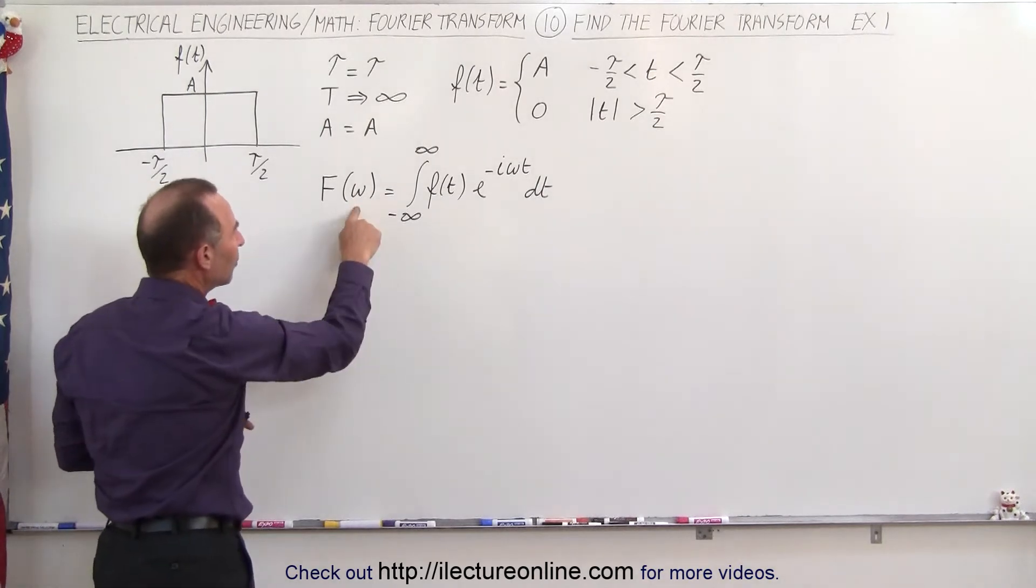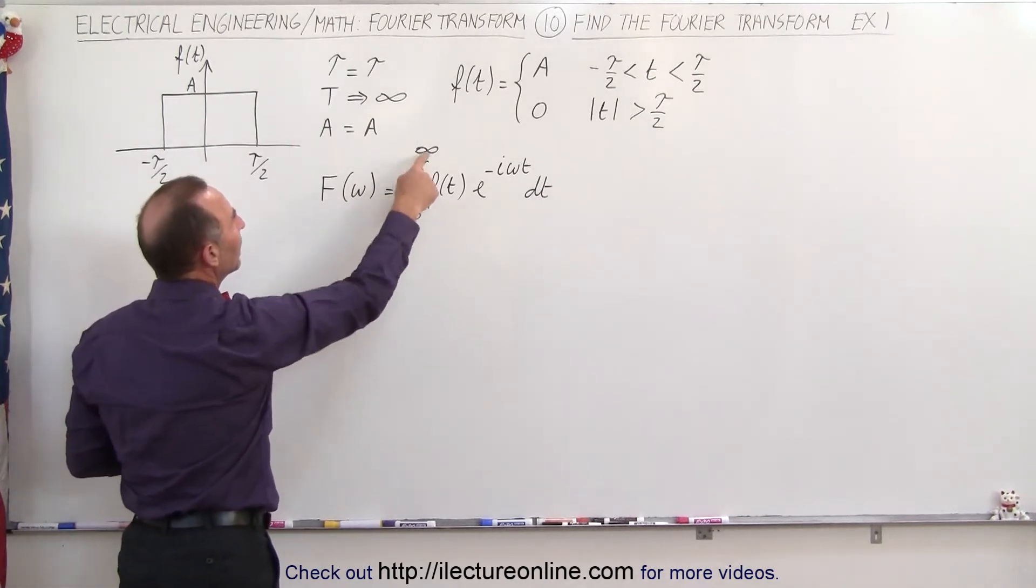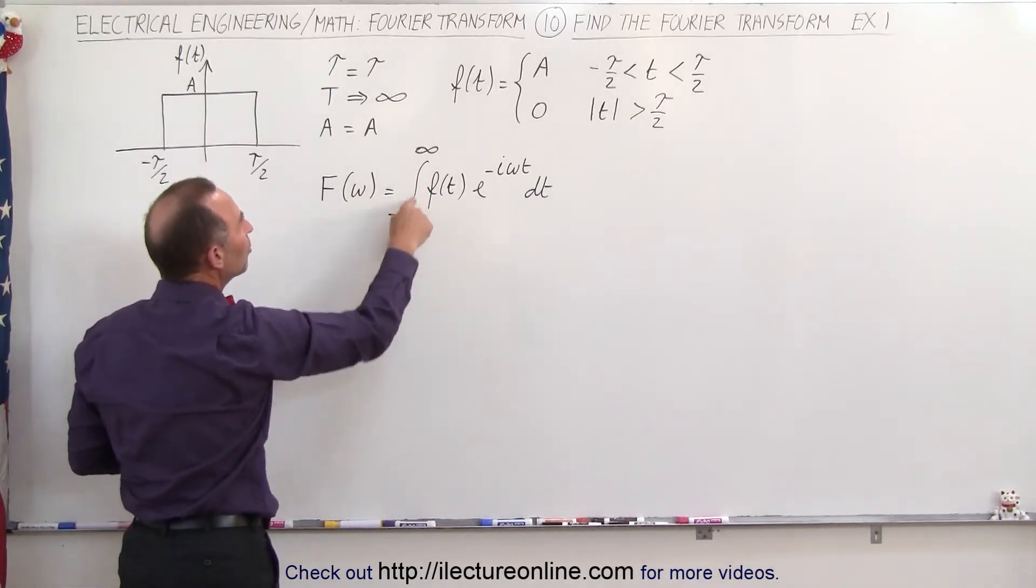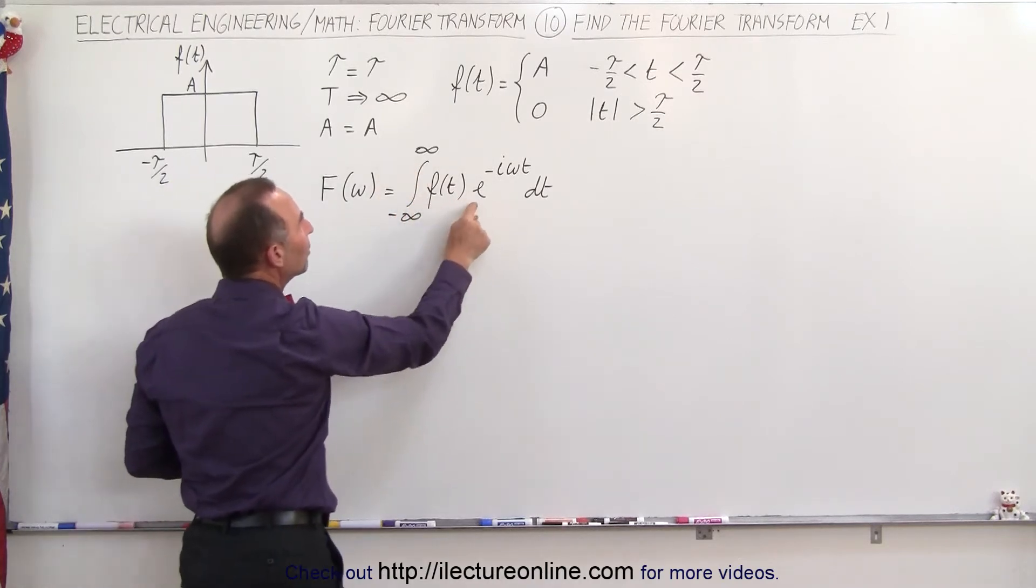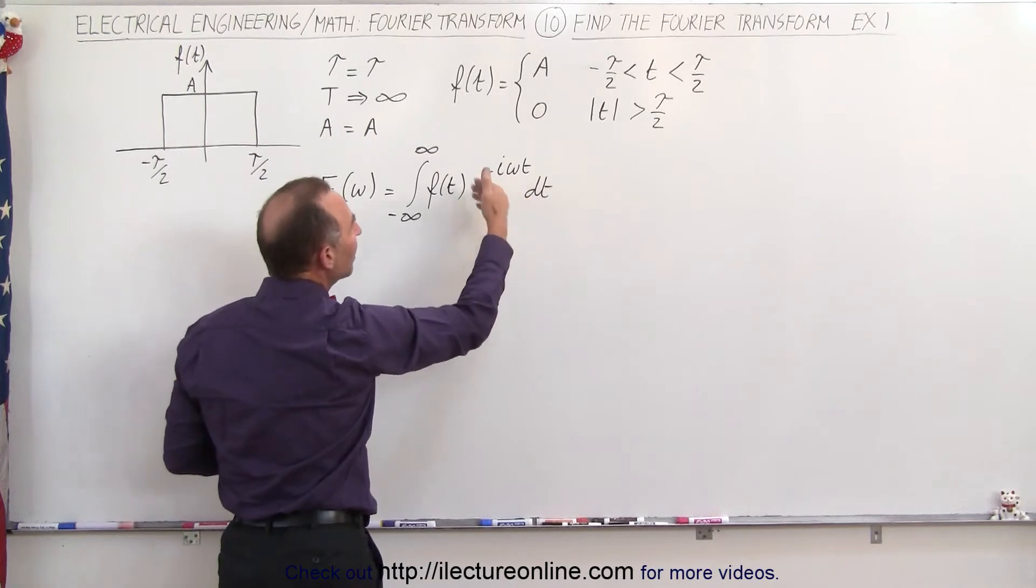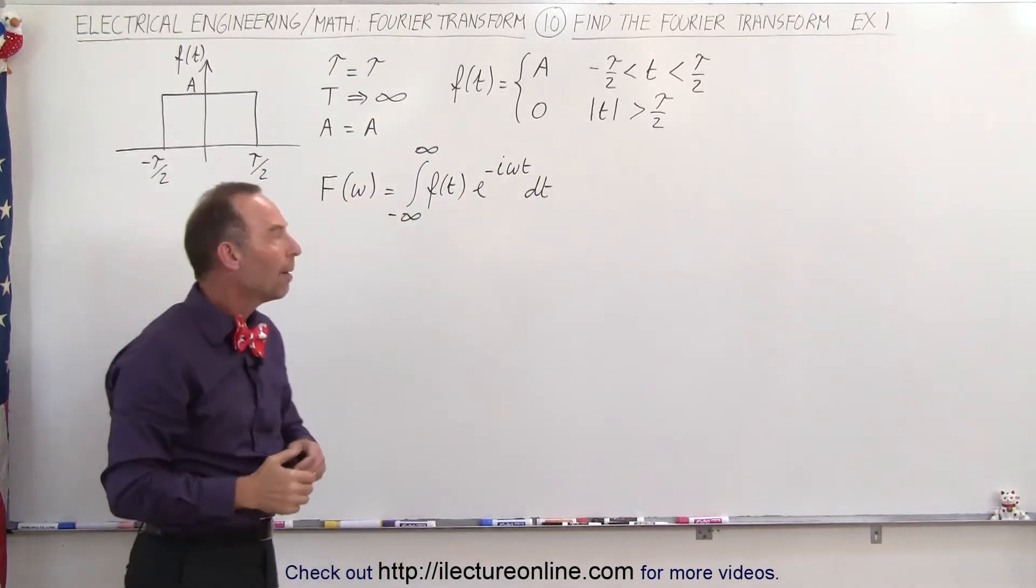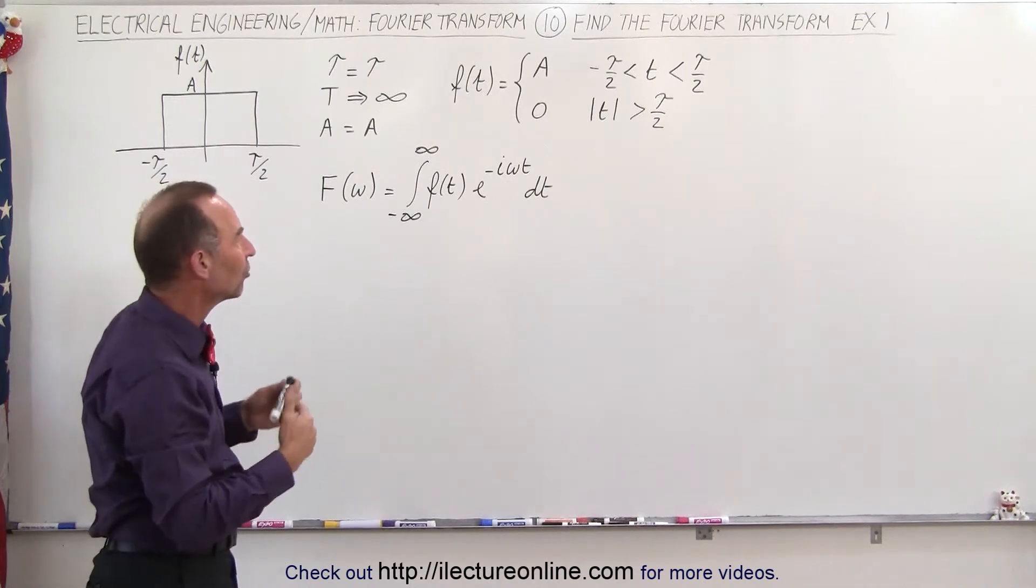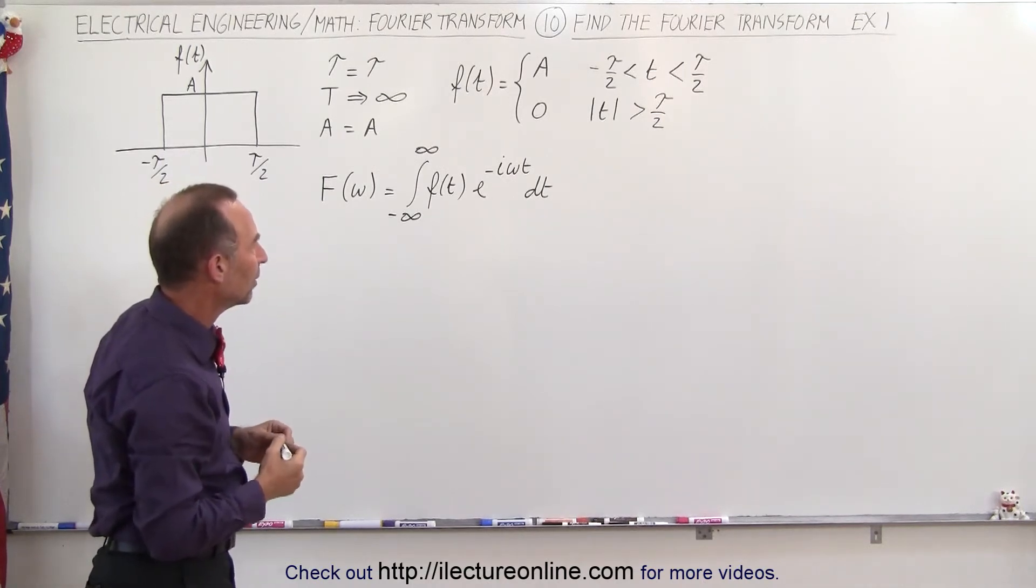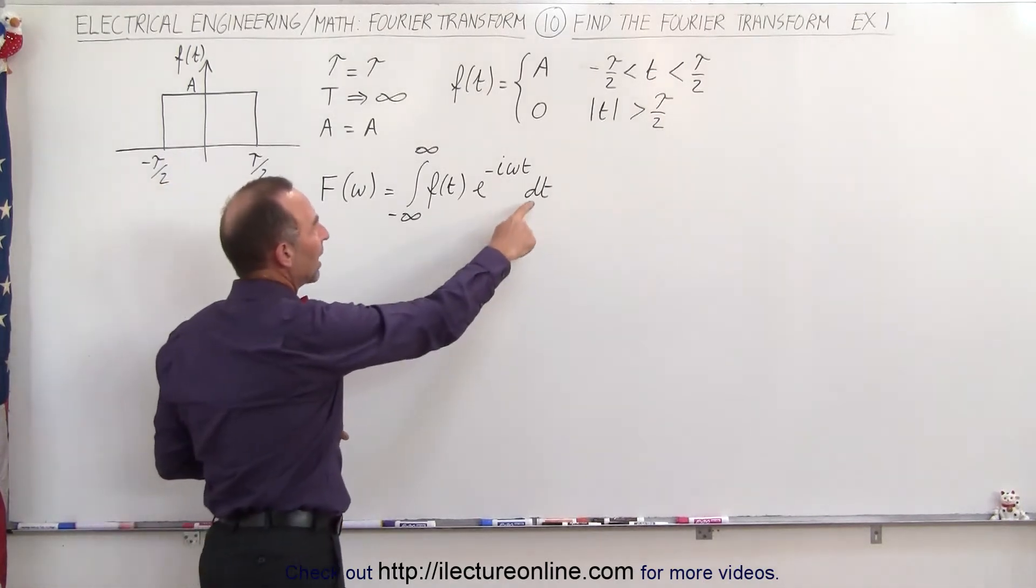And so the Fourier transform to transform it into the frequency domain is going to be equal to the integral from minus infinity to infinity of the function in the time domain times e to the minus i omega t. Sometimes also write e to the minus j omega t, so i and j can be interchanged—it's the imaginary number, the square root of negative 1. Of course we also need to have a dt.